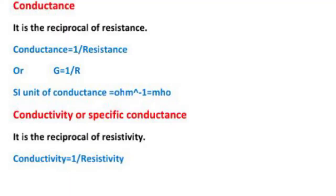Now, conductance. What is conductance? It is the reciprocal of resistance. Resistance is the property of the material which opposes the flow of charge, while conductance is the reciprocal of resistance and allows charge to flow through it. The relation between conductivity and resistivity is sigma equal to 1 upon rho, or rho equal to 1 upon sigma — both are reciprocal to each other.